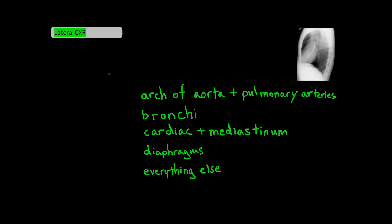What I'm going to do in this video is talk about one method you can use to systematically read lateral chest x-rays. You can always use whatever system you want as long as it works for you, but this is a way I use to remember what to look for. Lateral x-rays are often taken in tandem with PA or AP x-rays, mostly to give us a different perspective of a lesion, but also to look at areas not visible on frontal x-rays, such as behind the heart and at the base of the diaphragms.